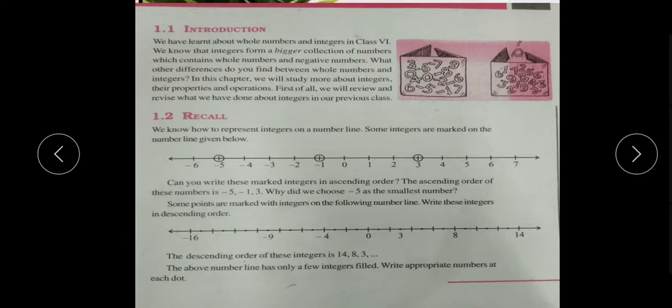Some points are marked with integers on the following number line. Write these integers in descending order. Here, we have to write in descending order. Which points are marked? 14, 8, and 3 are marked. In descending, we write largest number first - that is 14, 8, 3. Here there is minus 16 and minus 9. Which number is bigger? Very good - minus 9 is bigger than minus 16, and minus 4 is bigger than minus 9.